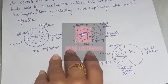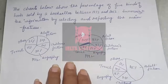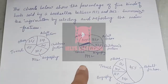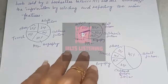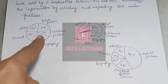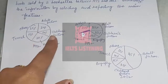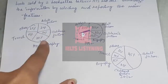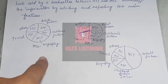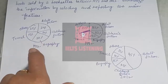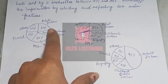These are the three graphs which represent the books sold by a bookseller in the years 1972, 1992, and 2012. There are five types of books: adult fiction, children's fiction, biography, travel, and others. These are the kinds of books the bookseller has sold in the three years.